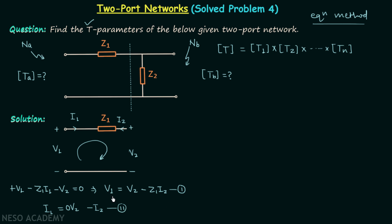When you compare equation 1 and equation 2 with the standard T parameter equations, you will find: parameter T11A equals 1, parameter T12A equals Z1, parameter T21A equals 0, and parameter T22A equals 1. In this way we have obtained the T parameters matrix of network NA, and now we will shift our focus to the analysis of network NB.